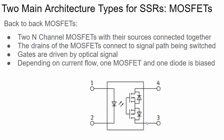With 0 volts on pin 3, that MOSFET won't turn on, but the body diode will forward bias when the signal flows from pin 4 through the biased MOSFET through the diode to pin 3. If you want current to flow the opposite direction, the opposite happens — the bottom N-channel MOSFET is forward biased and the signal flows through the diode. That's why back-to-back MOSFETs are used: to allow current to flow in both directions, just like a mechanical relay.